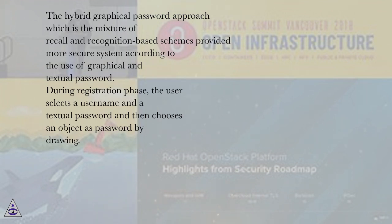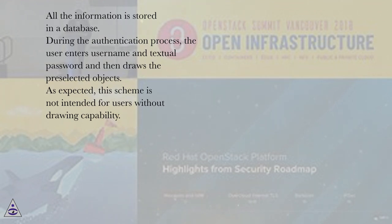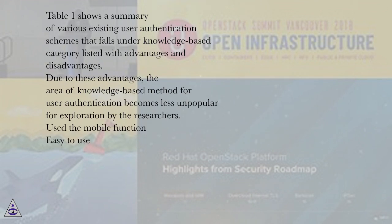During the registration phase, the user selects a username and a textual password and then chooses an object as a password by drawing. All the information is stored in a database. During the authentication process, the user enters the username and textual password and then draws the preselected objects. As expected, this scheme is not intended for users without drawing capability. Table 1 shows a summary of various existing user authentication schemes under the knowledge-based category, listed with advantages and disadvantages.